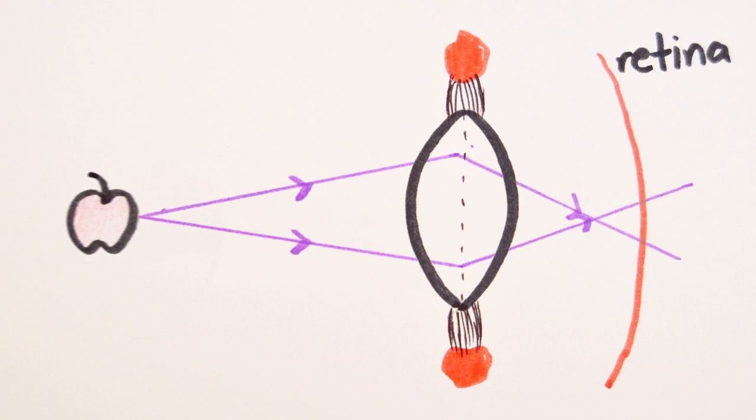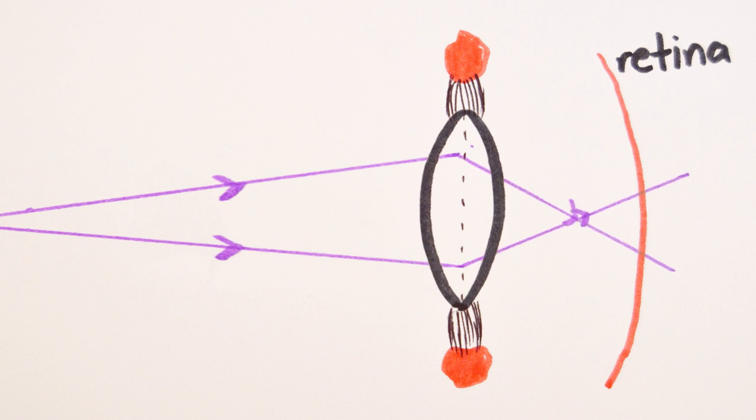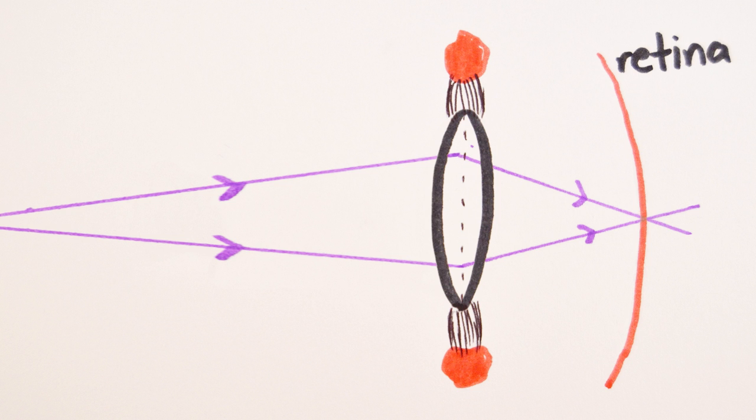If the object is far away the opposite occurs. The ciliary muscles relax and the suspensory ligaments stretch, causing the lens to flatten out in order to focus the light correctly.